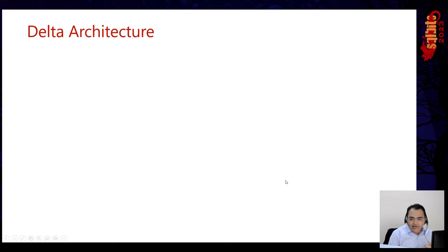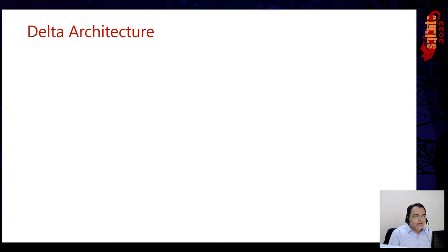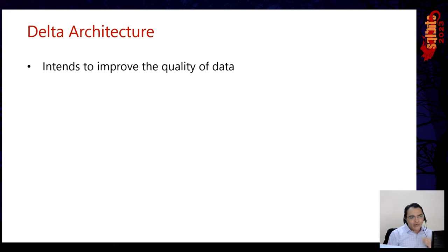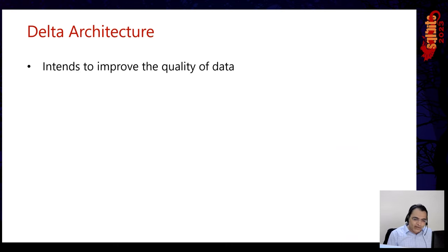We're going to focus on, first of all, what are the challenges we get with ETL pipelines, and then we'll focus on what Delta Live Tables are and how they can help us build reliable ETL pipelines. We'll talk about an architecture that is very common when we start working with data lakes. What is this Delta architecture? Number one, it focuses on improving the quality of data.